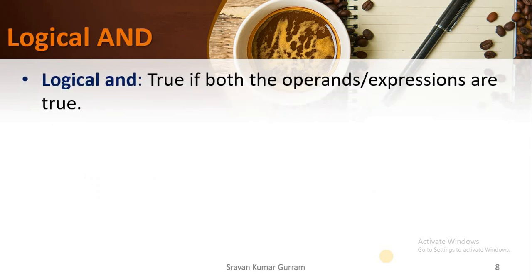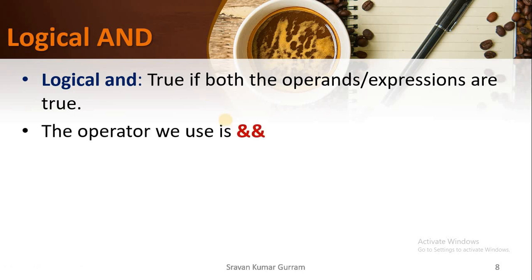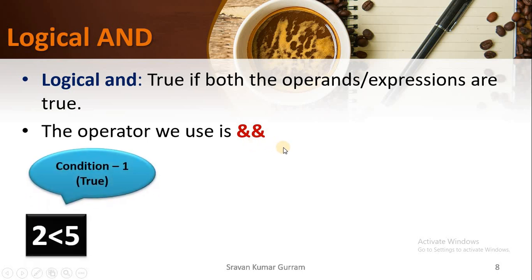Coming to logical AND — it returns true if both operands or both expressions are true. To implement the logical AND operator, we use the double ampersand symbol (&&). This is the logical AND operator in Java.